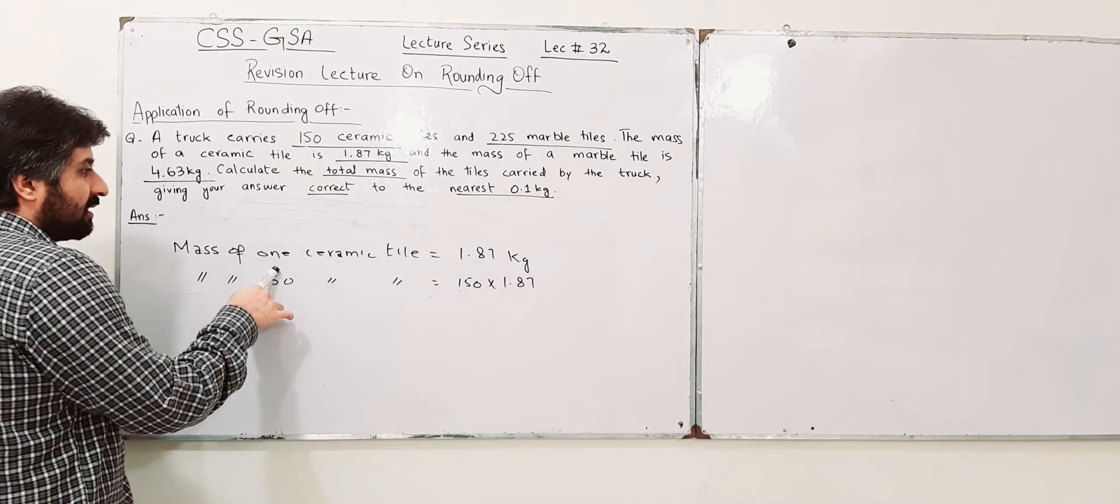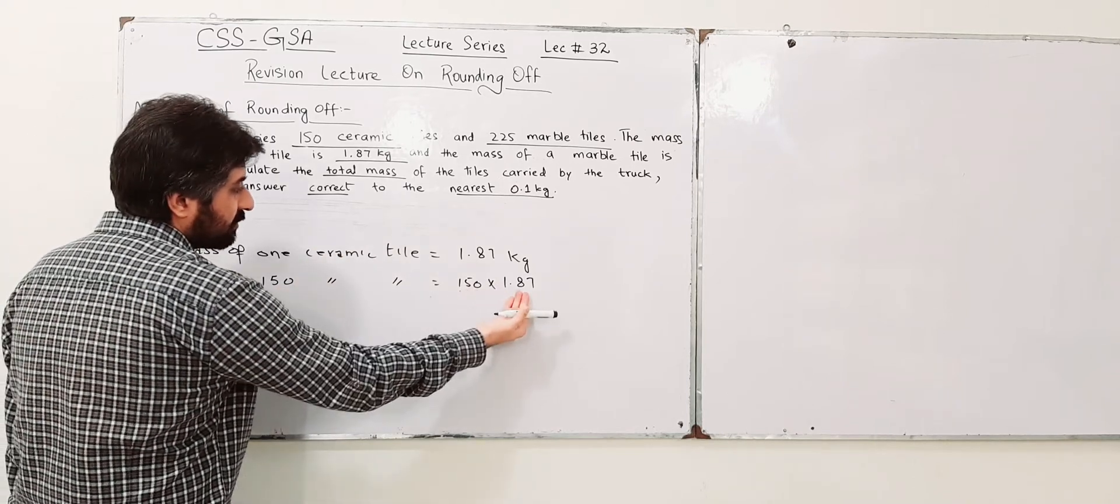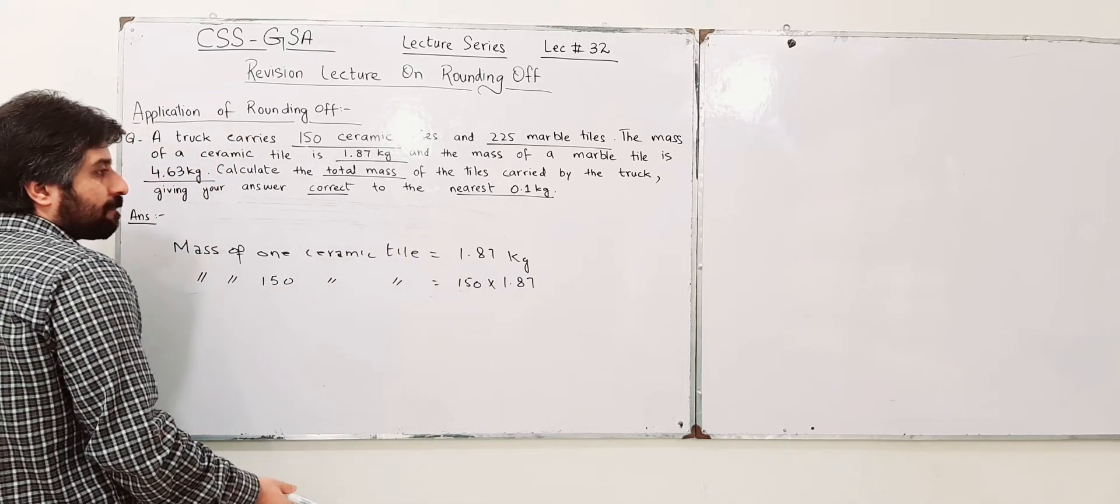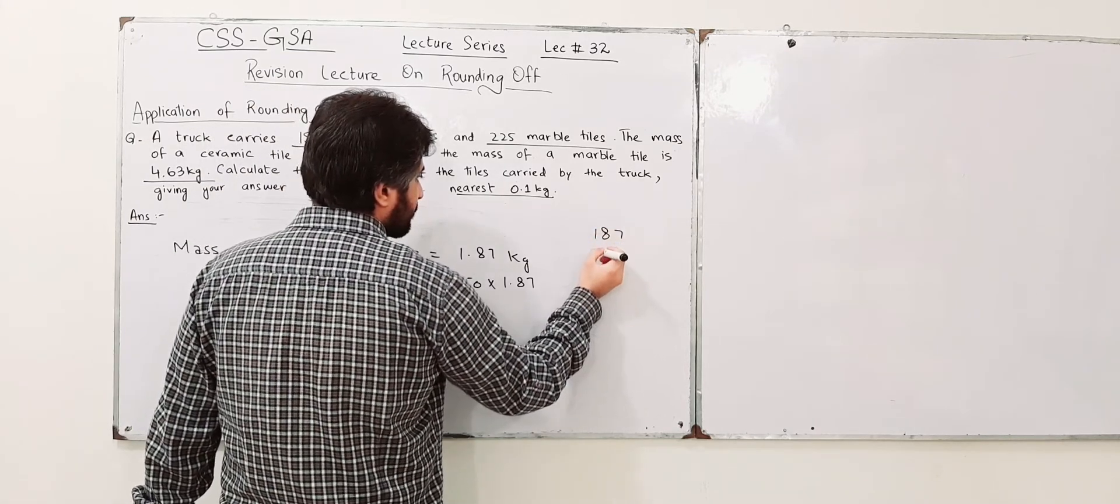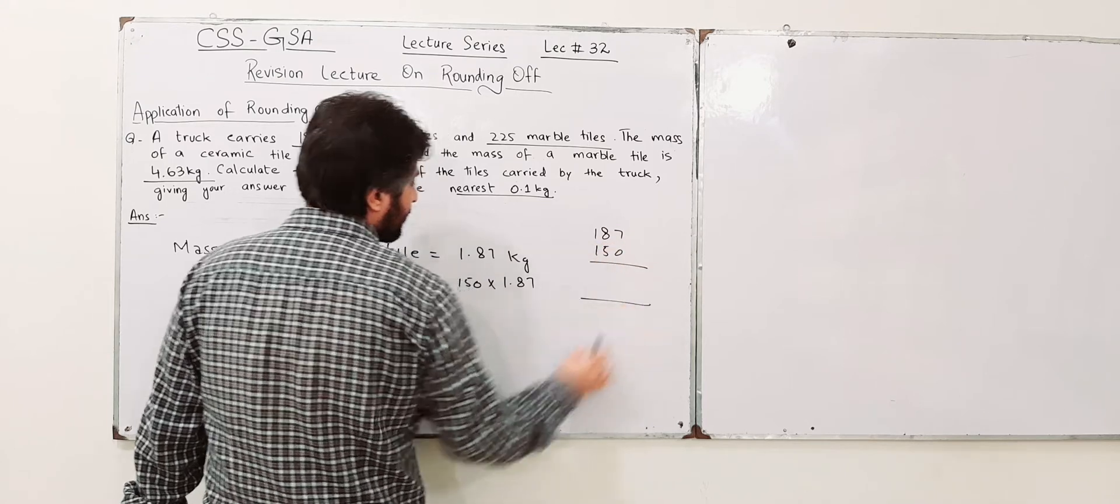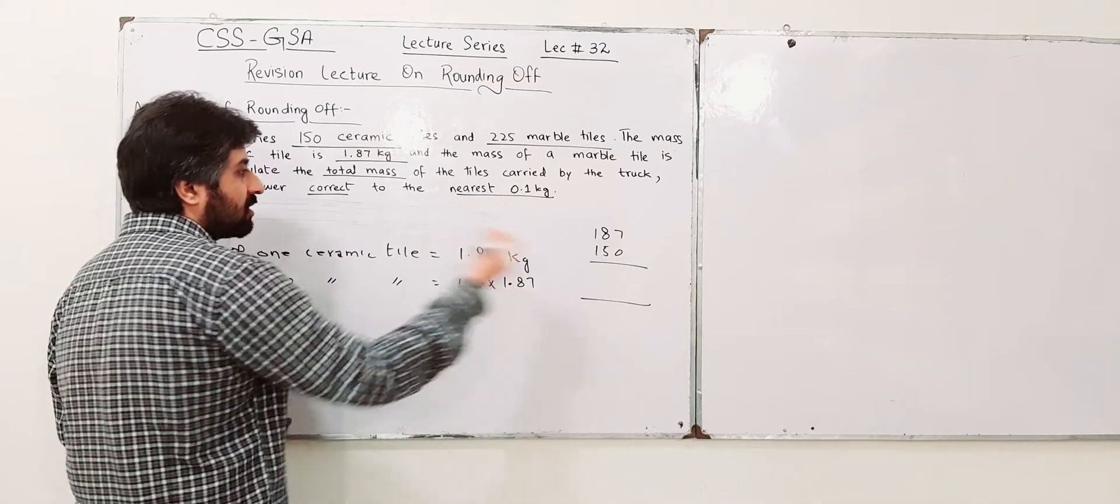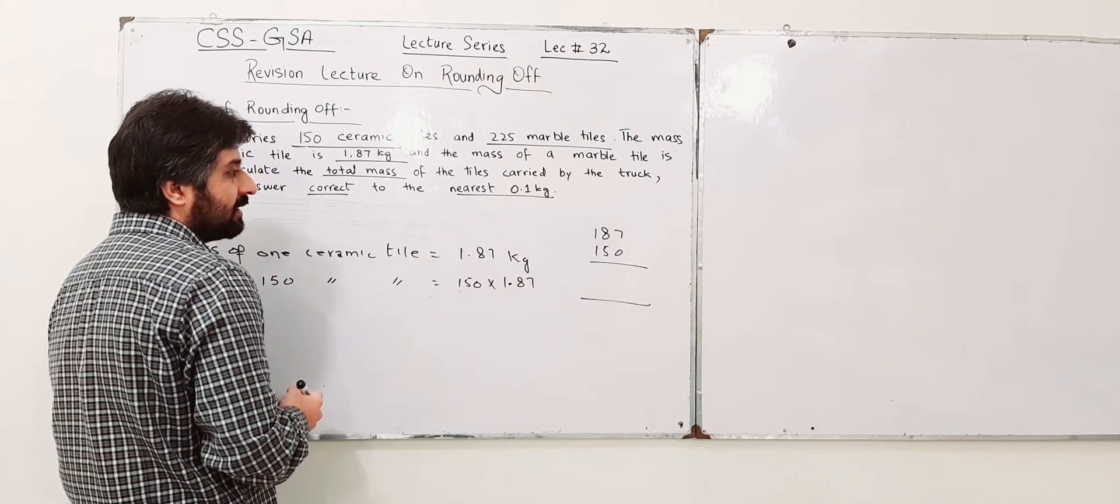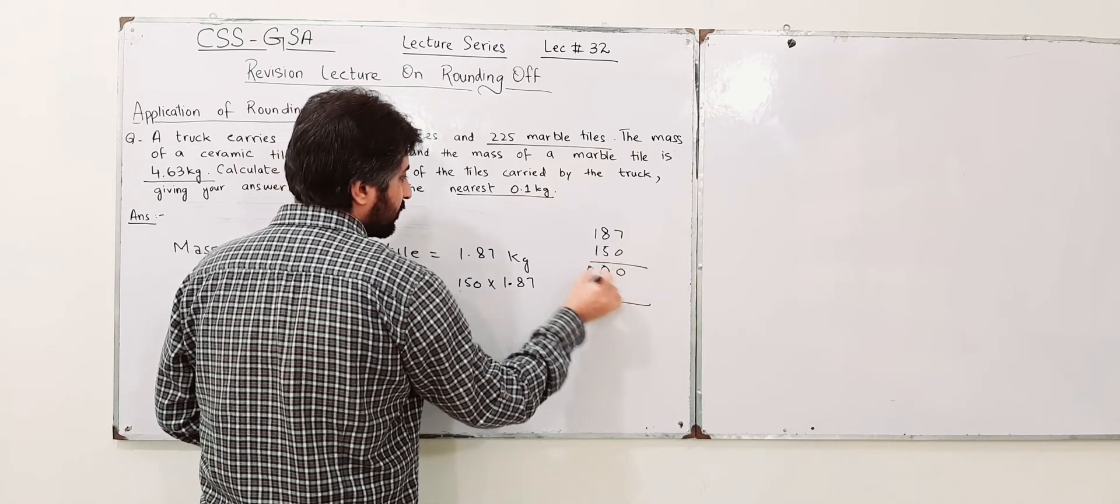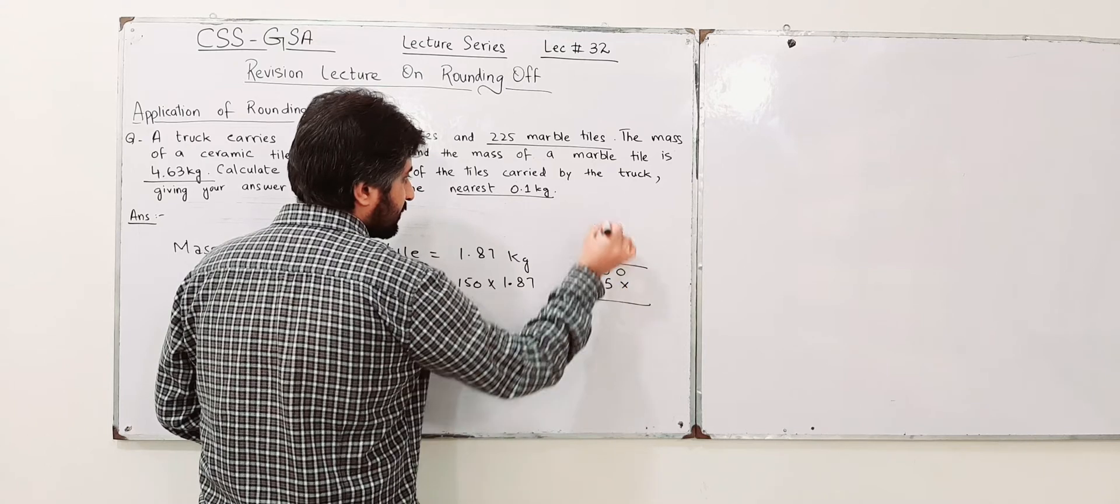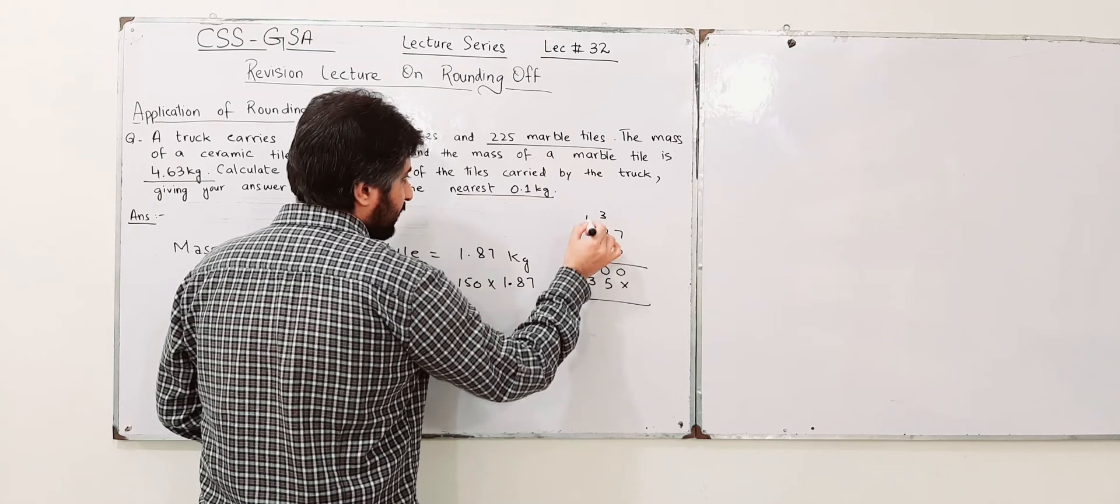And that is quite simple. One ceramic tile has this mass, 150 will have the mass 150 times 1.87. Do the calculation over here: 187, I am not including the decimal in my process of multiplication because I will add this at the end. 0 into 7 is 0, 0 into 8 is 0, 0 into 1 is 0. 5 into 7 is 35, 3 over here. 5 times 8 is 40 plus 3 is 43. 4 over here.